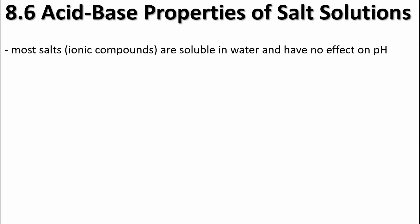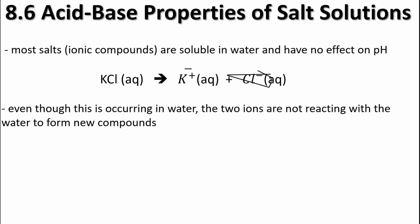Most salts, which are ionic compounds, are soluble in water, and we've learned in the past that they do not affect the pH of the water solution when they dissolve. And here's an example here. So we've got KCl breaking into some K ions and some Cl ions.